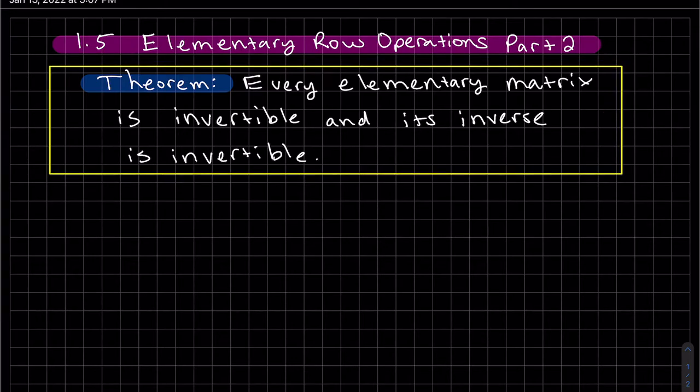So this was actually the theorem that we stated on the last video, but we'll be using it for today's video. Every elementary matrix is invertible and its inverse is invertible. We found all the different types of elementary matrices on the last video, and we showed that they were all invertible.